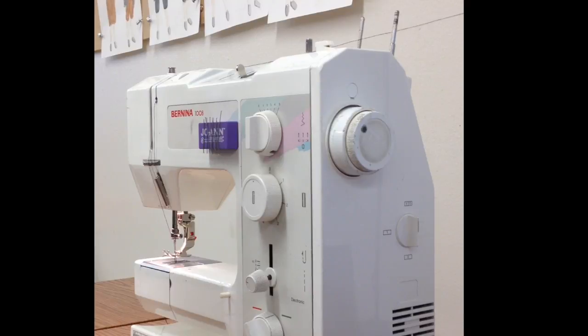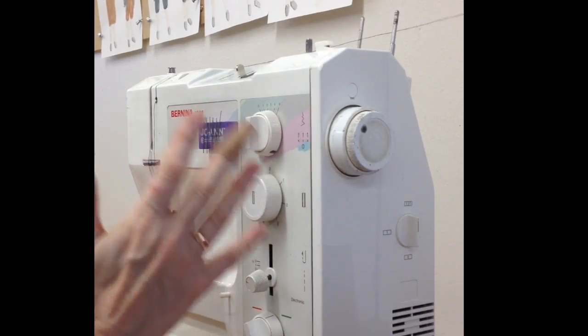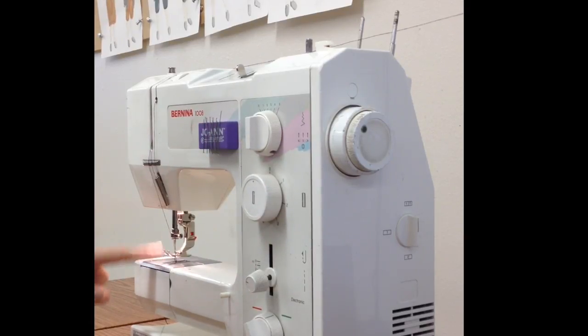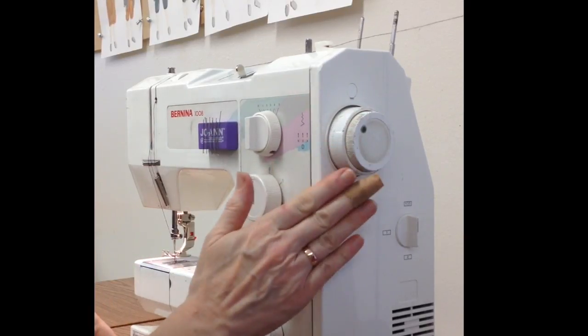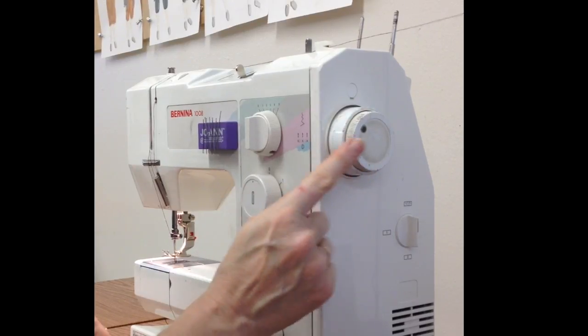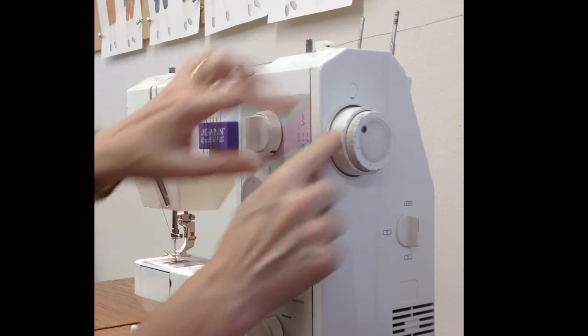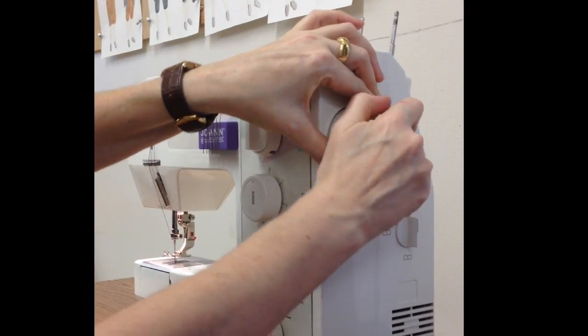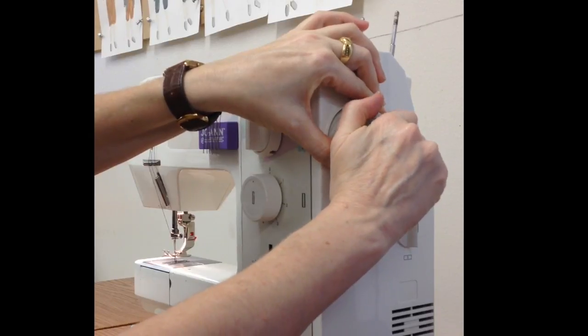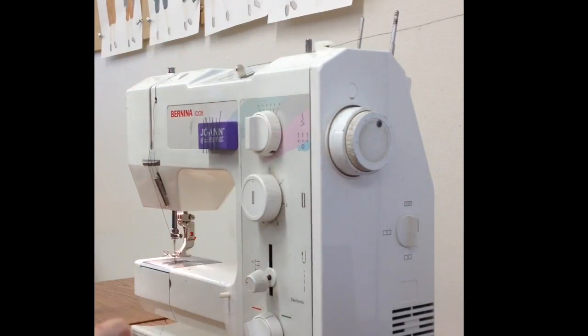Sometimes when you press the gas pedal with your foot and you can hear the machine running but the needle is not going up and down, check the flywheel. It is possible that someone has disengaged the flywheel in order to wind a bobbin and then has forgotten to tighten the flywheel back up to engage the thread uptake lever and the needle. Then it will go.